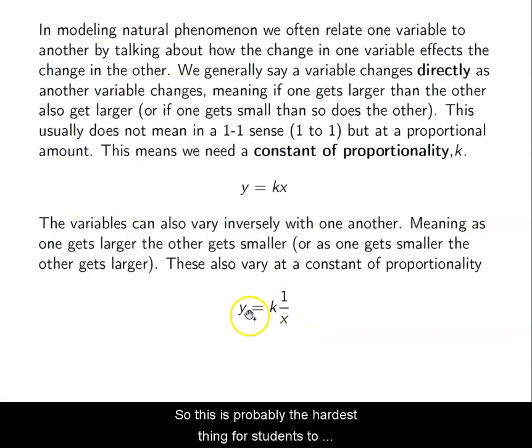So this is probably the harder thing for students to grasp. But as x gets large, y gets small. So let's think about a small x, or a decent-sized x. If x is 1, we have 1 over 1. Y would be 1 or k times 1, just k in that case.